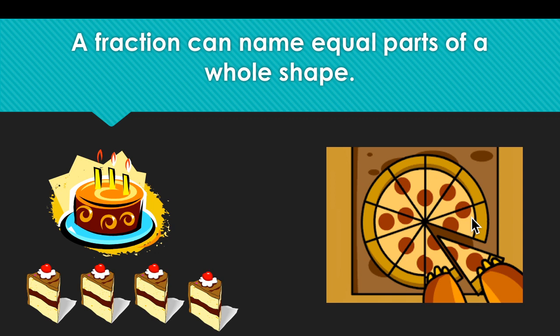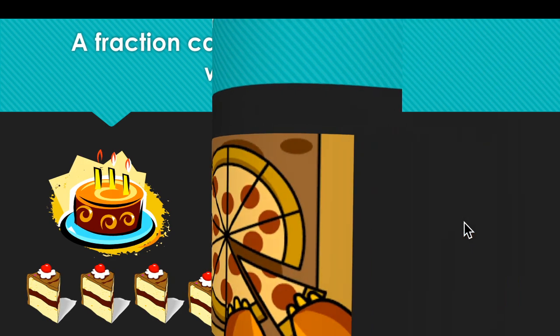This is a pizza. This pizza is made of 10 slices. Ten slices, or ten equal parts, make up one whole shape — a round shape, a circle. Someone takes one slice of pizza; that one slice will be gone. One slice out of ten can show the fraction.